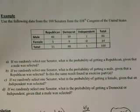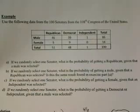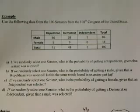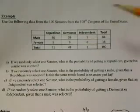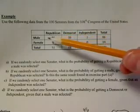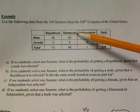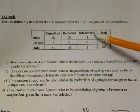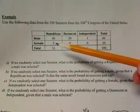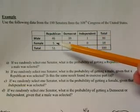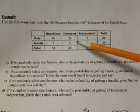In this example, we're asked to use the following data from the 100 Senators of the 108th Congress of the United States. In the table below, we see male Republicans are 46, male Democrats is 39, independent males is 1, Republican females is 5.